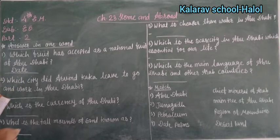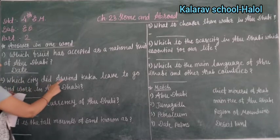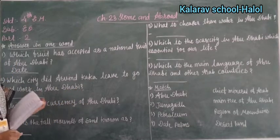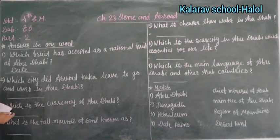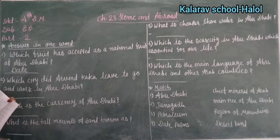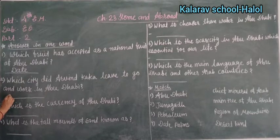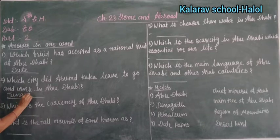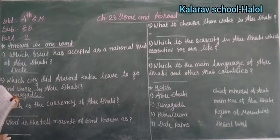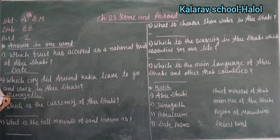Second number: which city did Arvind Kata live in before going to Abu Dhabi? Arvind Kata lived in the city of Junagadh. So the answer is Junagadh — he lived in Junagadh and then went to Abu Dhabi.